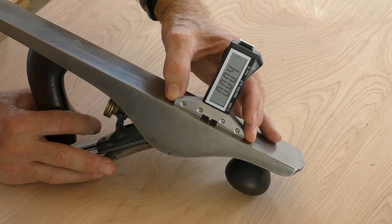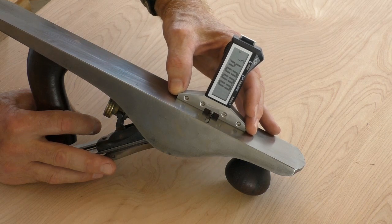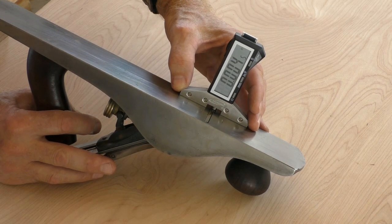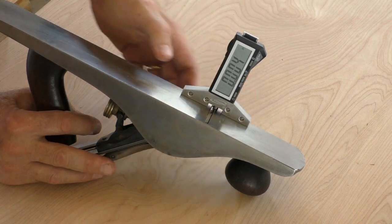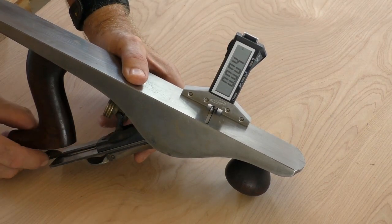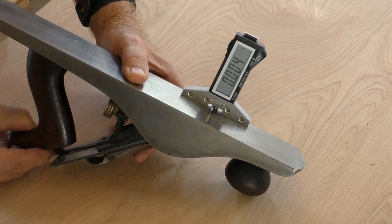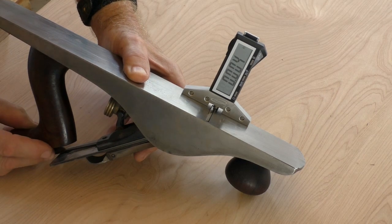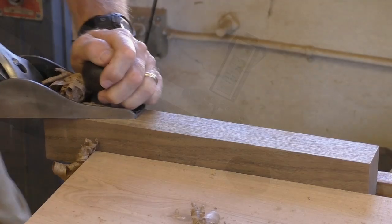Now make lateral adjustments so the iron is co-planar to the sole. Set PlaneCheck to one side of the iron and adjust as needed. Repeat on the other side and you're done! Now it's time to make that perfect shaving.